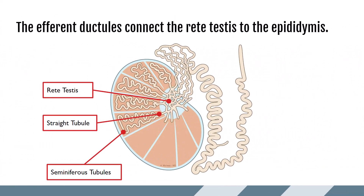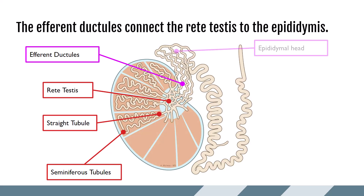The rete testis is a network of tubules at the hilar portion of the testicle, where structures enter and exit, delineating a clear intra- and extra-testicular anatomy. The rete testis is connected to the head of the epididymis via the efferent ductules. The efferent ducts or tubules bring the spermatozoa from inside the testicle to the epididymal head. The efferent ducts are also not seen by ultrasound.